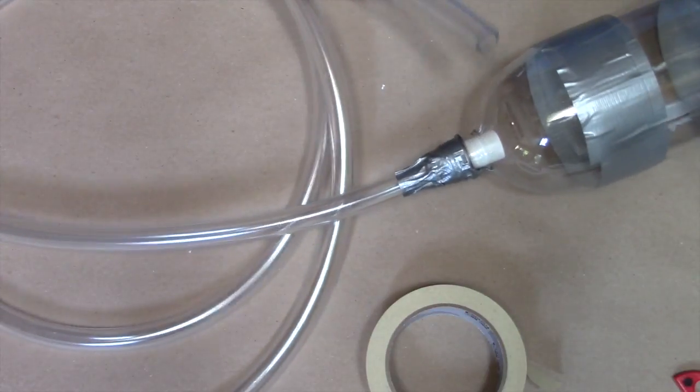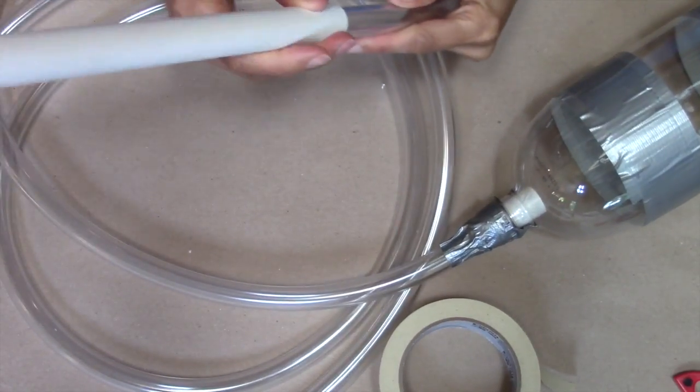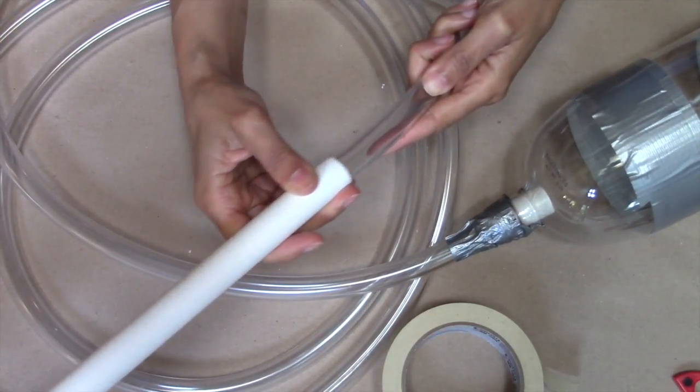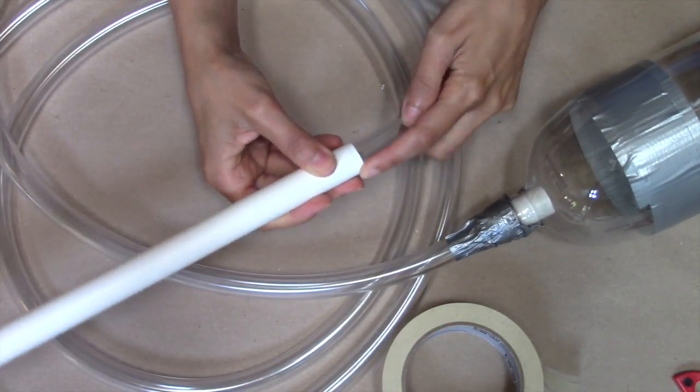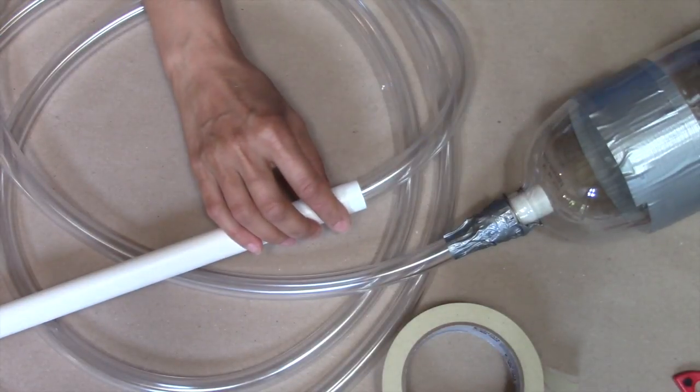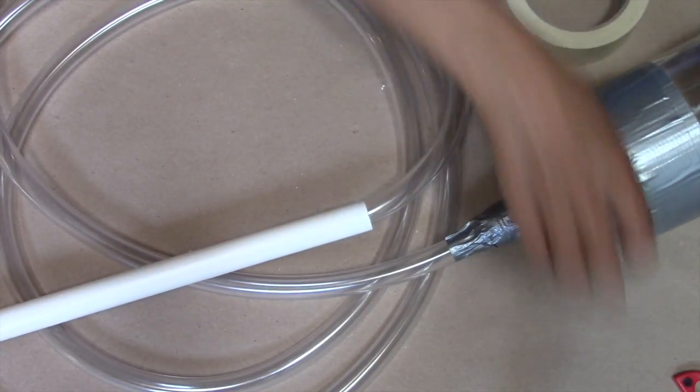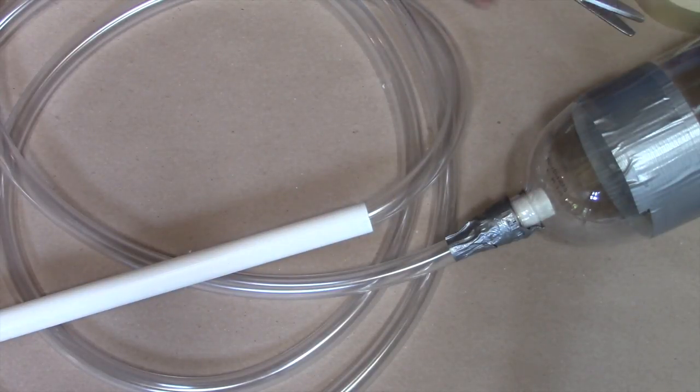Feed about an inch or two of the other end of the flexible tube into the longer PVC pipe and apply a layer of masking tape and duct tape to this end as well. Once again, you could choose to use only duct tape or masking tape here.